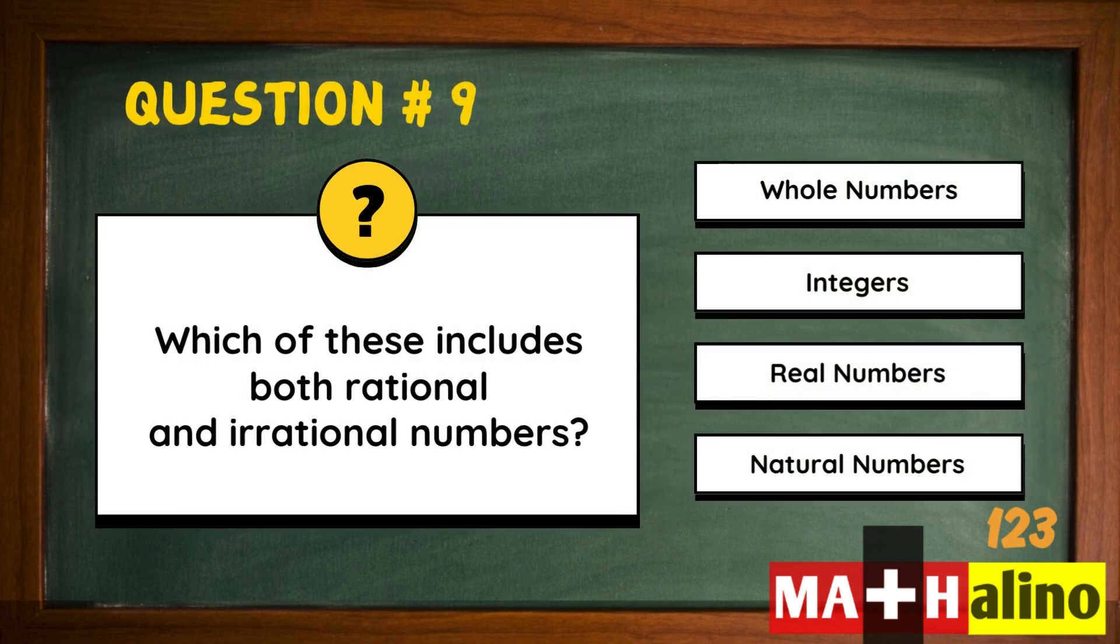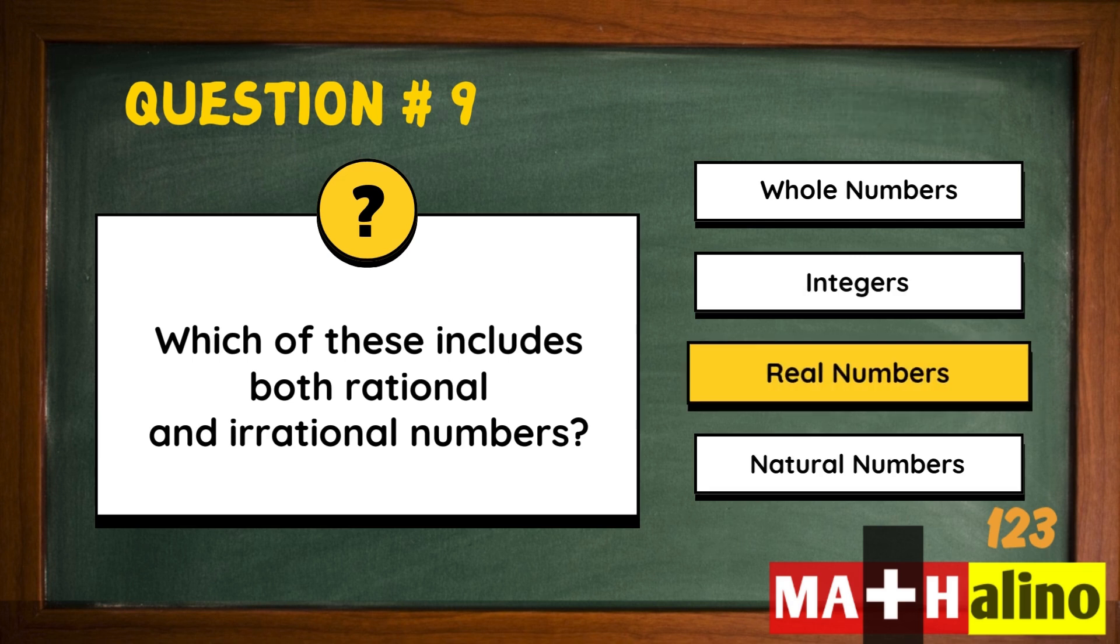Which of these includes both rational and irrational numbers? Real numbers.